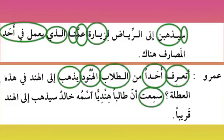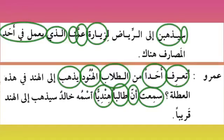'Taliban hindiyyan' — 'taliban' is your ismu inna mansoobun, 'hindiyyan' is your na't. We know for any country if you add the nisba ending — yadda'ul jinsiya — like 'misri' for Egypt, 'arabiyyun' for Arab — it gives the nationality. 'Britaniyyun' for British — so it describes the person's nationality. He is saying: I heard that an Indian student — 'ismuhu khalidun' — his name is Khalid — 'sa yadh-habu' he is going to India 'qariban' — very soon.